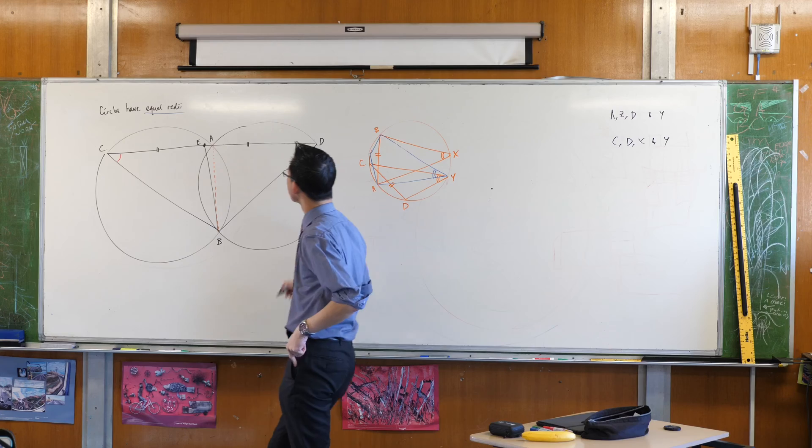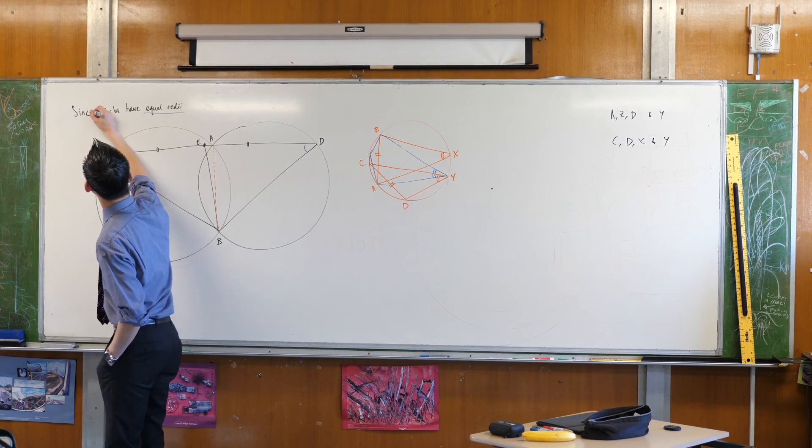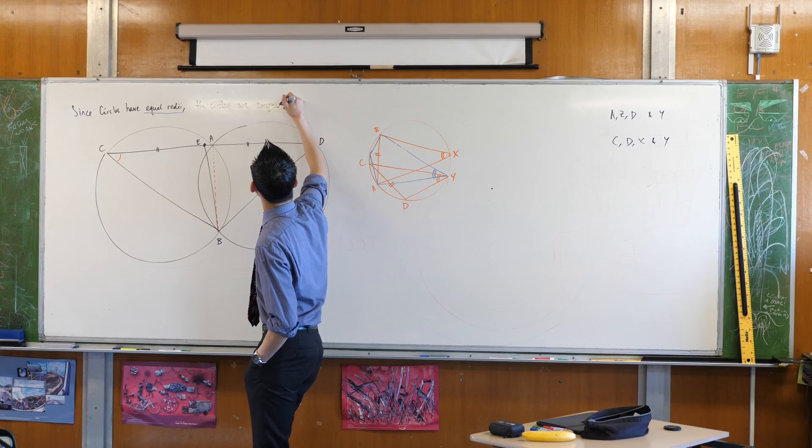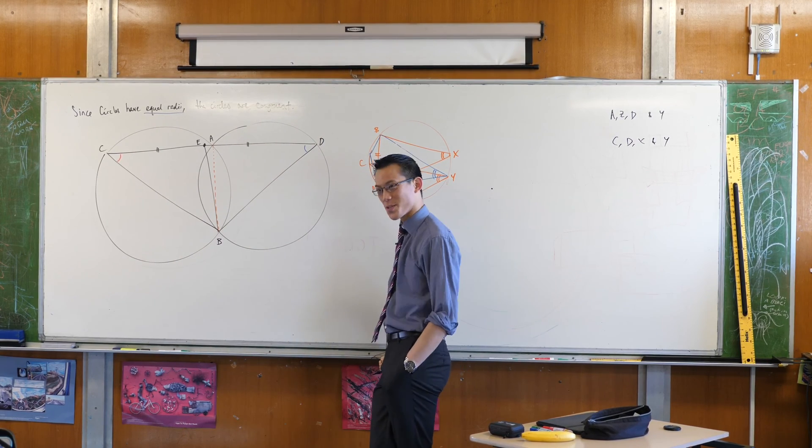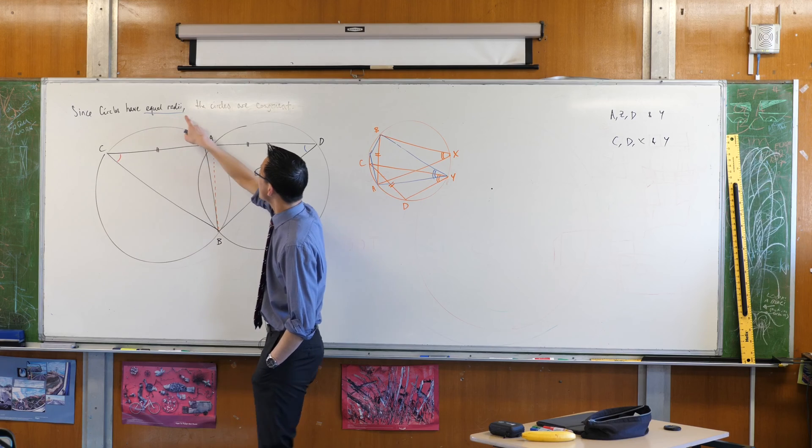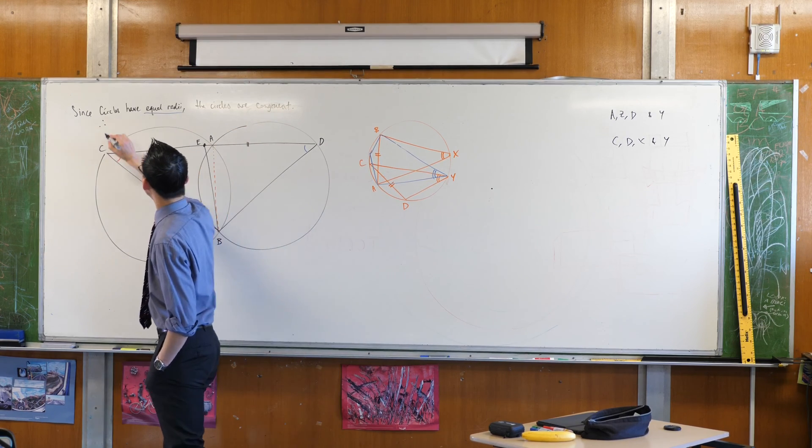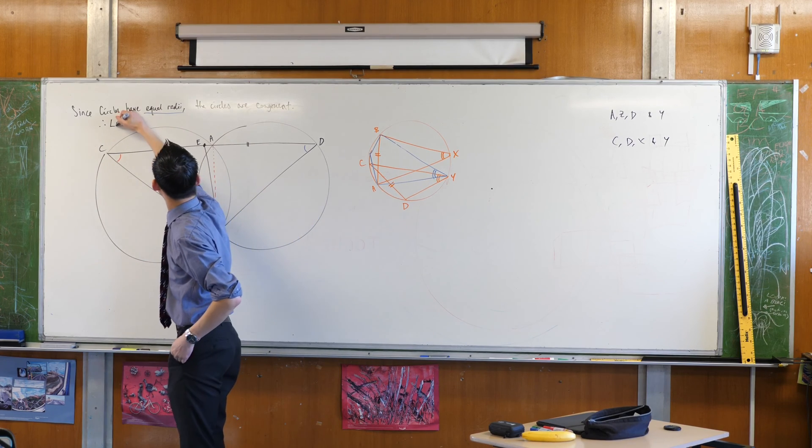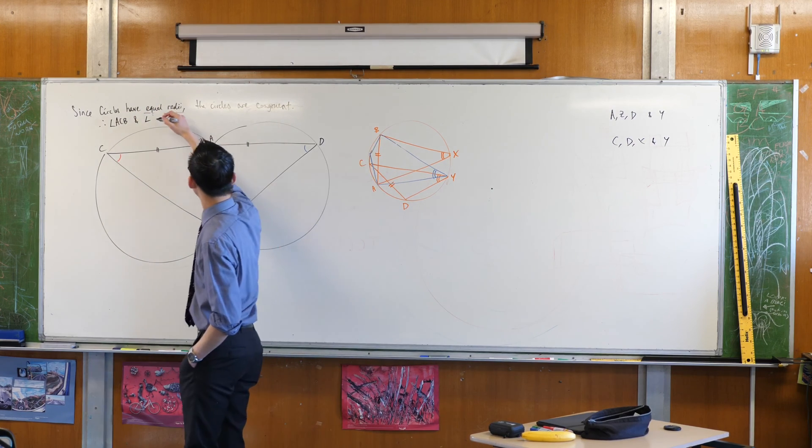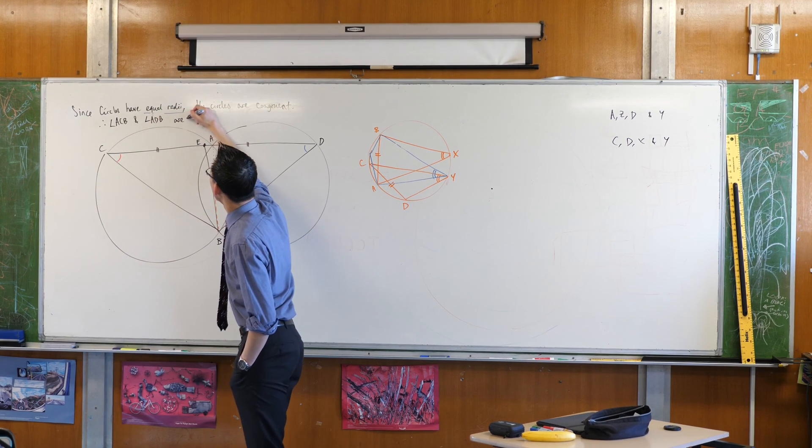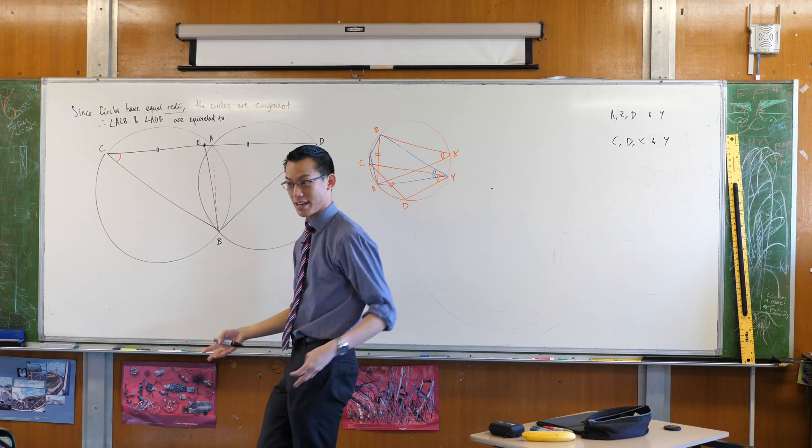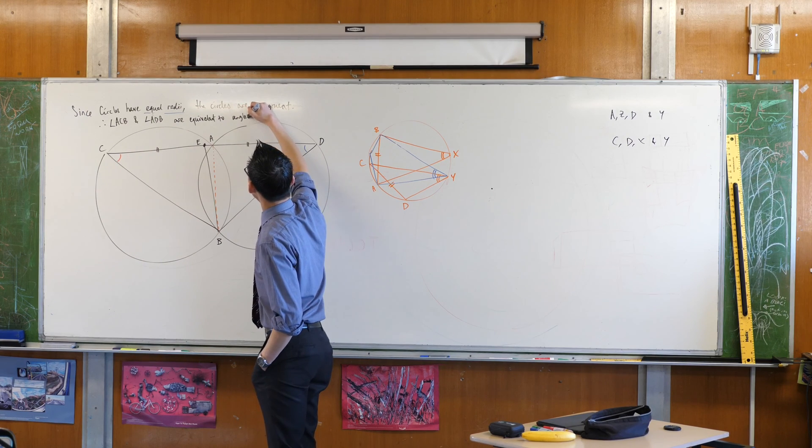So I guess I would actually say, my reasoning would be, since the circles have equal radii, the circles are congruent. One of the nice things about circles is that, unlike triangles, you want to prove triangles are congruent, you need all this information, right? But circles only have a single piece of information that makes them what they are, so if you have the equal radii, then the circles are congruent, therefore, both angles, angle ACB and angle ADB, are equivalent to, because they're both standing on this arc AB, they're just like angles standing on the same arc, right? For a single mark, that's all I would expect.